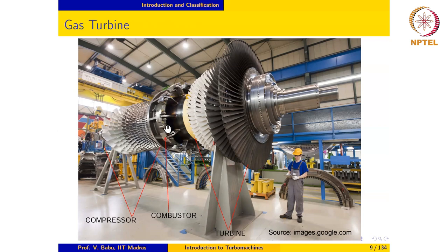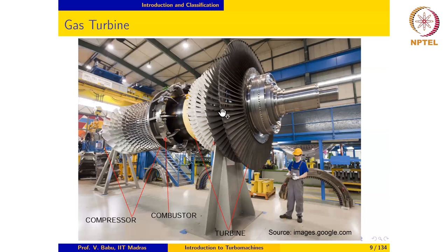After compression there is a combustor where fuel is burnt and heat is supplied to the working substance. The working substance then undergoes expansion in the turbine section. We can infer that this is the turbine section because the blade size keeps increasing as the fluid expands and requires more cross-sectional area. So the turbine section has increasing blade size, and the compressor section has decreasing blade size. Unlike the turbocharger, here the turbine produces power not only to run the compressor but also to drive a generator to generate electricity.